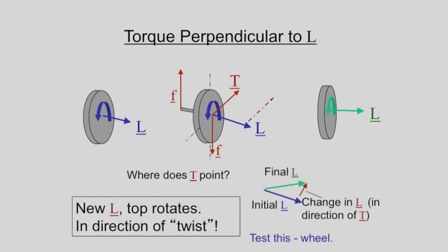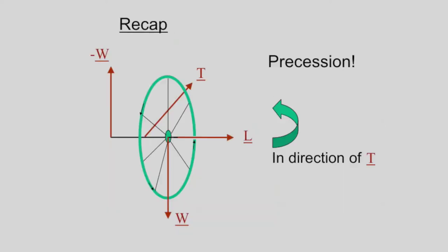So here's the summary of that that you might like to look at. The angular momentum is pointing that way. The change in the angular momentum is along the torque, and so the angular momentum has to drift around in this horizontal circle. So we've tested that by looking at the wheel.